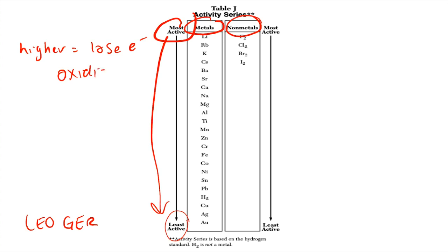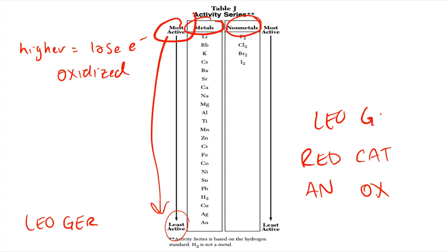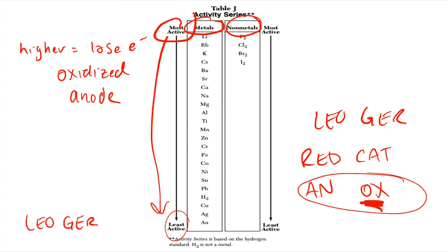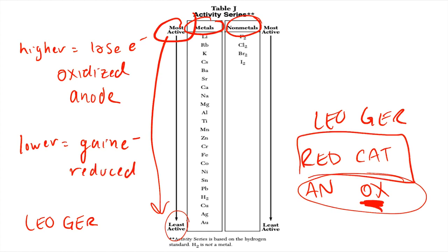Things higher up on Table J tend to lose electrons. Another time we write LEO says GER — if you lose electrons, that is being oxidized. The article talked about the mnemonics 'red cat' and 'n-ox.' The thing that is higher up loses electrons and is oxidized, and that is the anode — that's where n-ox comes into play: anode is oxidized. The lower something is, it's more likely to gain electrons, meaning it is reduced — red cat: reduced is the cathode.